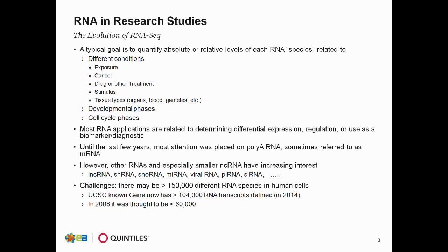There may be over 150,000 different RNA species in human cells. For example, UCSC Known Gene now has greater than 100,000 different RNA transcripts defined. Just to show how that has changed over the years — in 2008, we thought there were less than 60,000 different RNA species in human cells. So quite a change in just a few years, and a lot of that has been made possible by the use of technologies such as RNA-Seq.